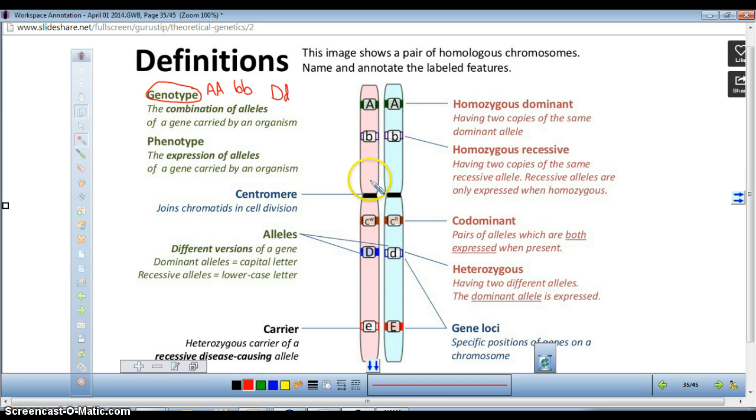We get half of our chromosomes from our mom and half from our dad. Because they're homologous chromosomes, they have the same genes, but they could have different alleles.